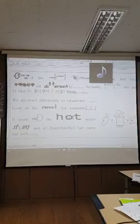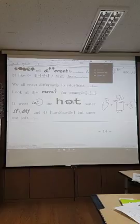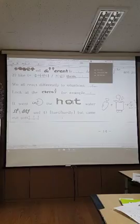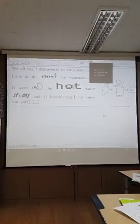Look at the carrot, for example. 예를 들어 당근을 보죠. It went into the hot water strong and hard, but came out soft. 그것은 뜨거운 물에 강하고 딱딱한 상태로 들어갔지만, 부드러워져 낫지.